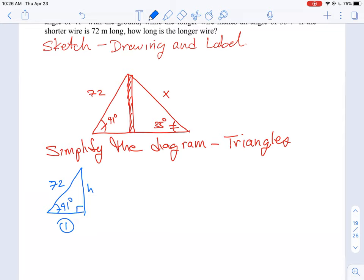The second triangle I see is the other side of that shape, which is the one with the 35 degree angle. There is a height to the tower, the X which is the wire we're supposed to find, and we know it's 35 degrees. So I'm going to label that as triangle two.